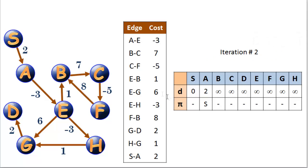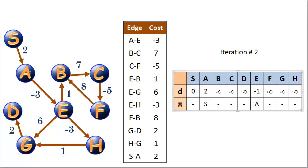Let's start iteration 2. We can relax every edge, but the only ones that really make a difference are outbound edges from S and A, because every other vertex has a cost of infinity. There are no other outbound edges from S besides to A. For outbound edges from A, we have A to E with a cost of negative 3. So we can get from S to A for a cost of 2, then A to E for negative 3, reaching E at a cost of negative 1 with a predecessor of A.